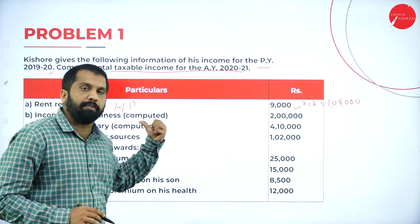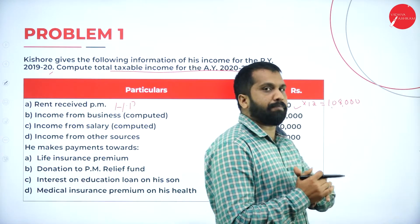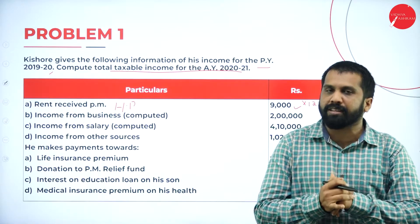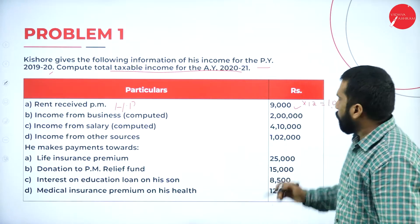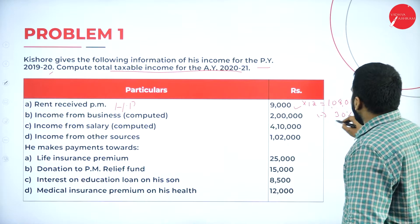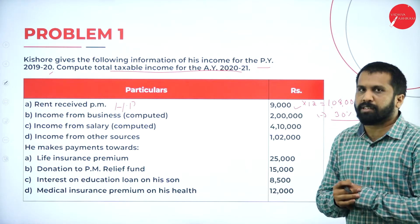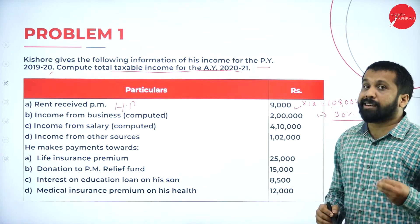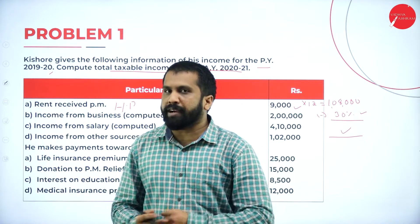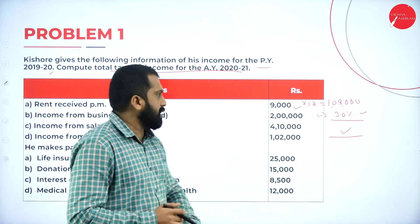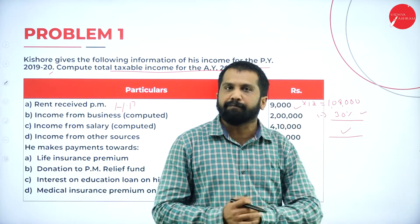To find income from house property: multiply rent by 12 to get per annum, then minus 30% standard deduction, and you get income from house property. They will not ask you about let-out property, self-occupied, interest received, municipal tax — those were already done in your previous session on house property. Here, you are calculating assessment of individual, not assessment of house property.